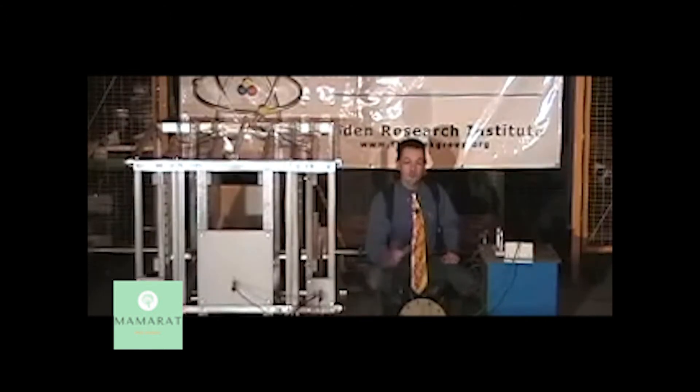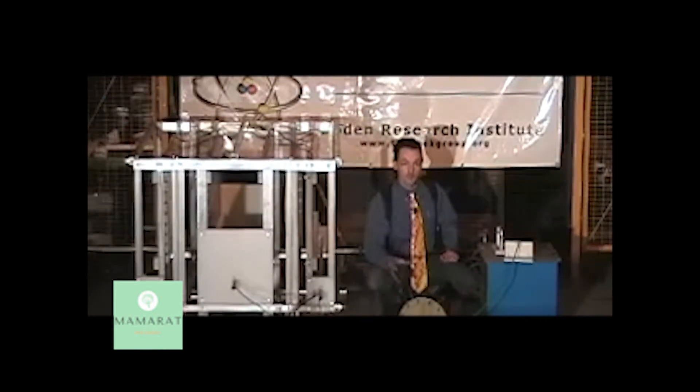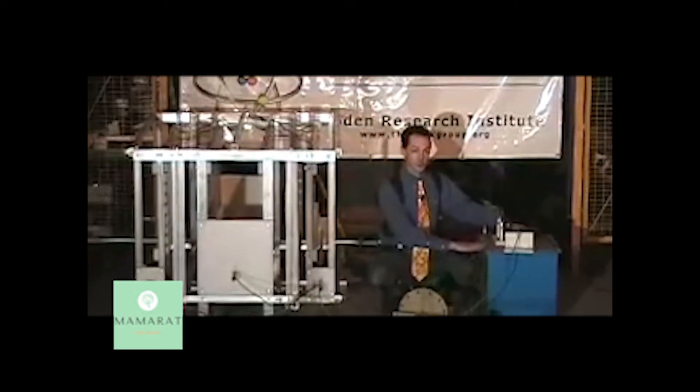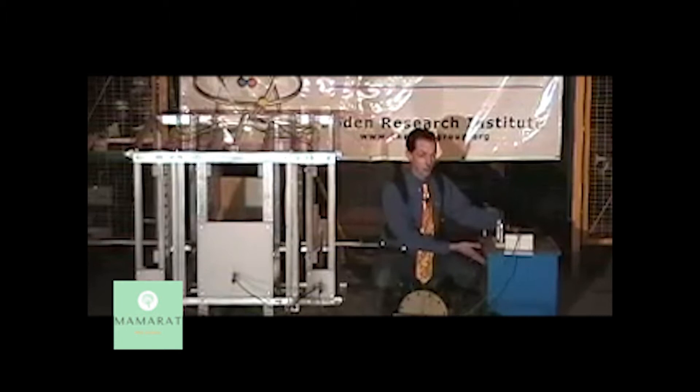A Tesla coil is actually a very simple machine. It works by having the power supply here which is our pole mount distribution transformer recased in this pretty blue box.